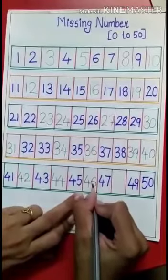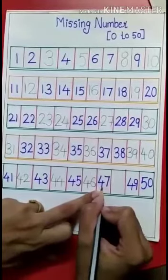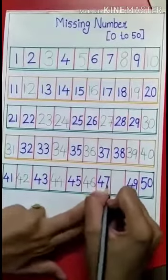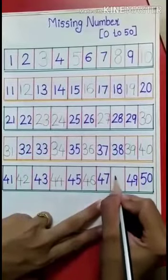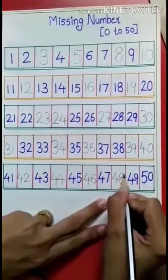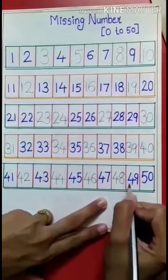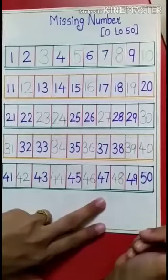Now 44, 44, 45, 45. After 45, 45, 46, 46. After 46, 46, 47, 47. Now what comes after 47, 47?